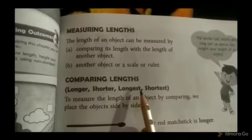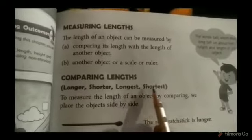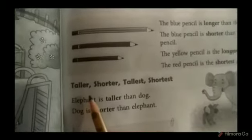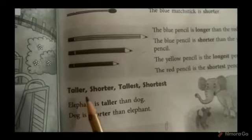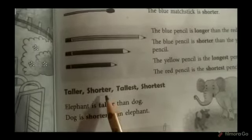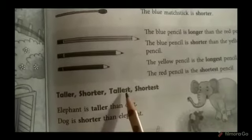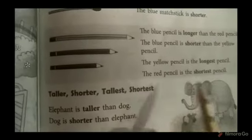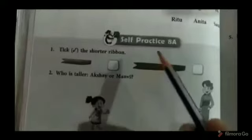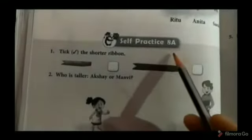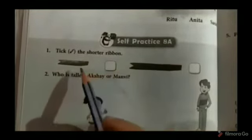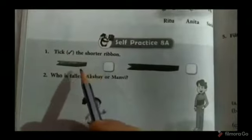Longer, shorter, longest, and shortest. Longer means lamba, shorter means chota. Longest means sabse lamba, and shortest means sabse chota. Isi tarah, taller means lamba, shorter means chota, tallest means sabse lamba, and shortest means sabse chota.